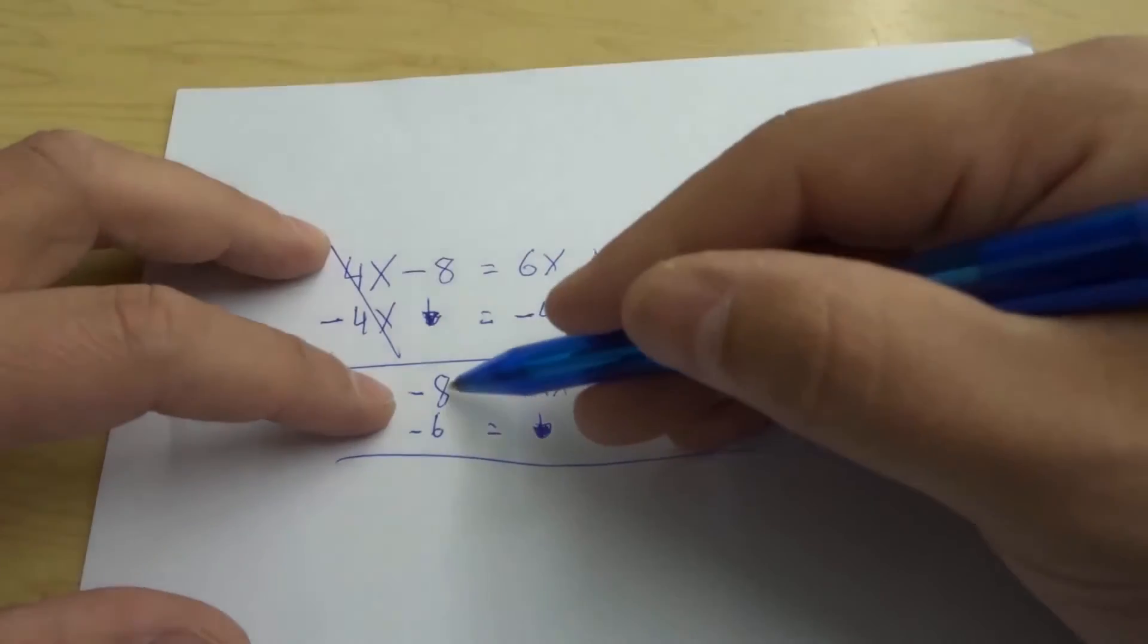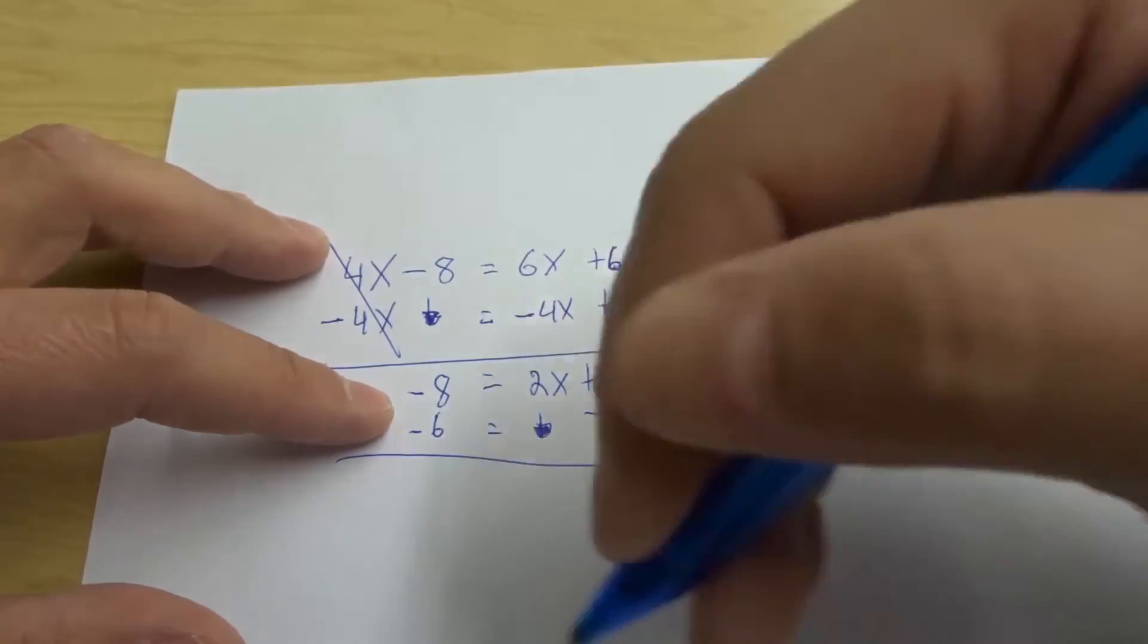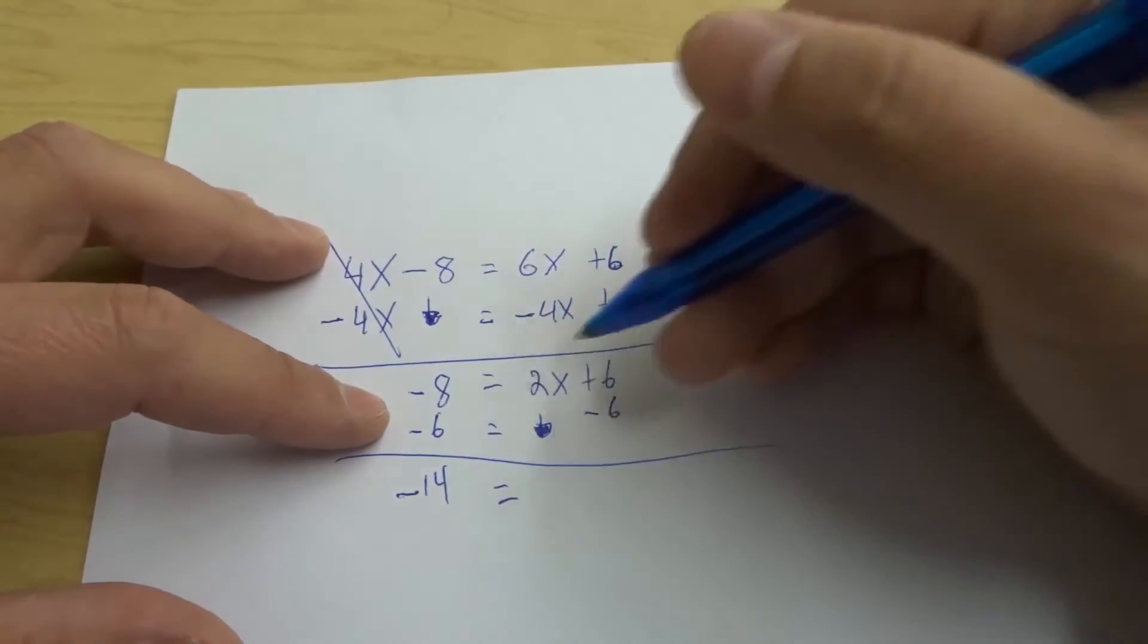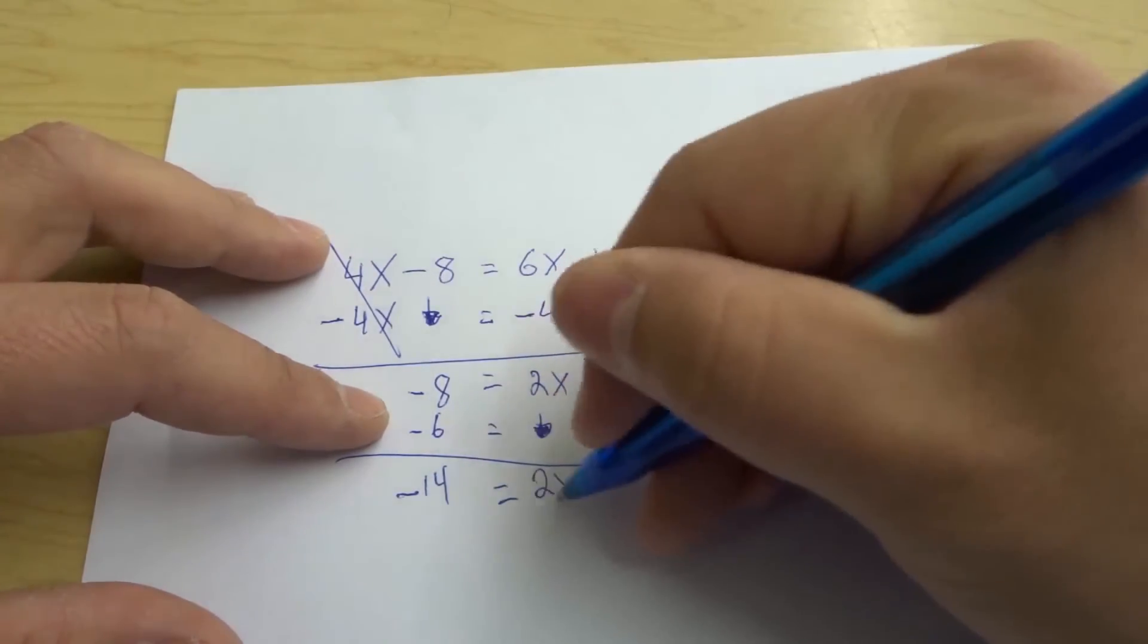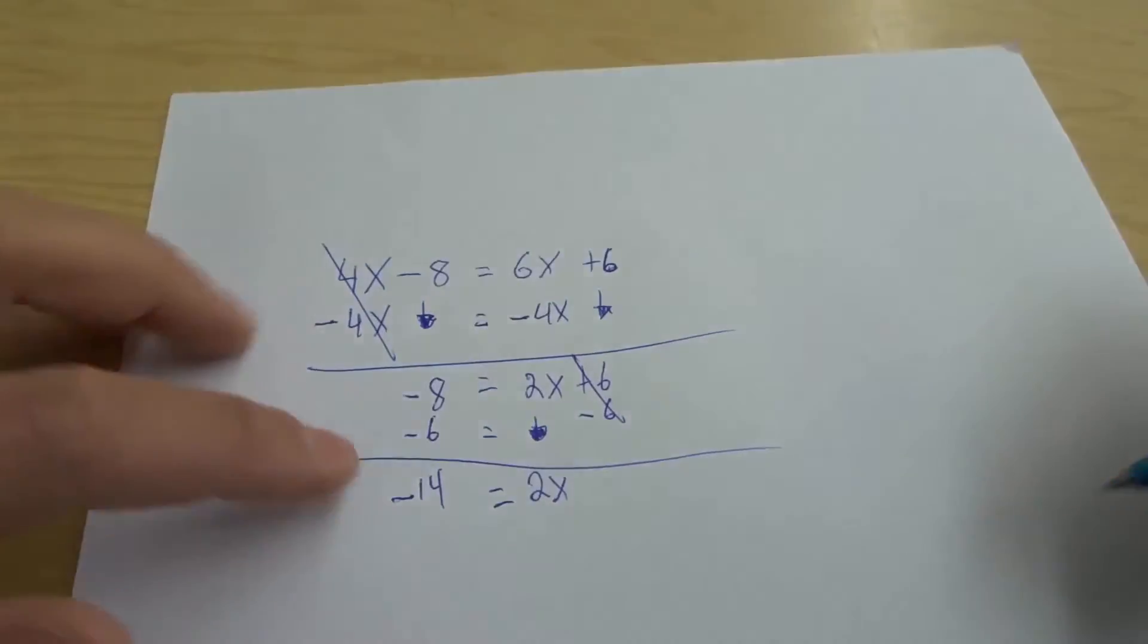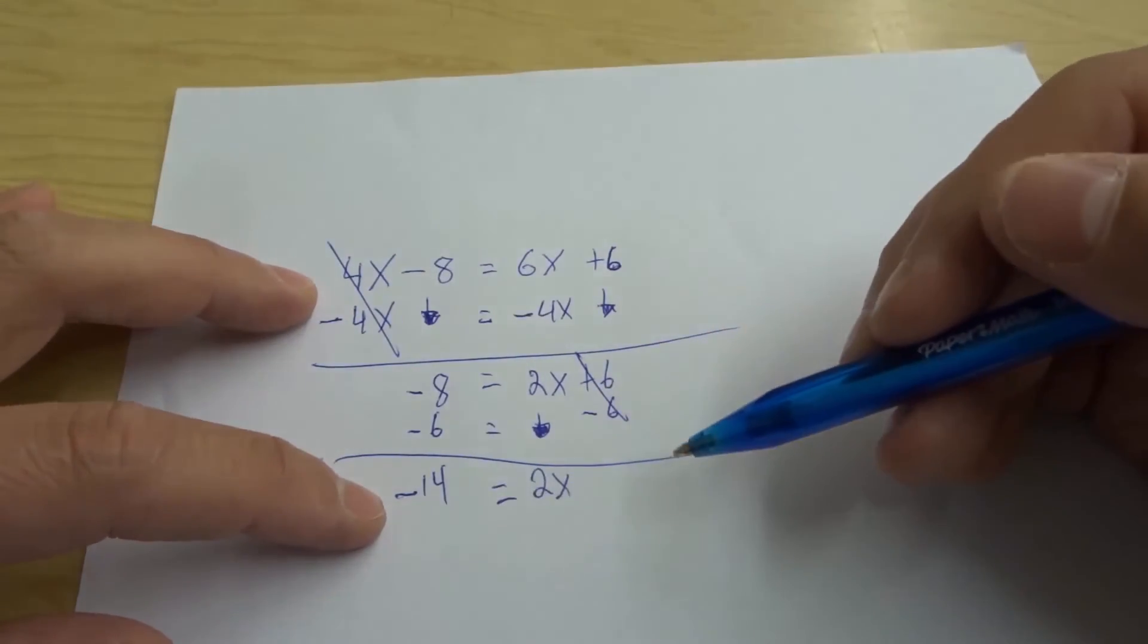So let's do this we have negative 8 minus 6 is equal to negative 14 and negative 14 is equal to 2x and then the plus 6 and the minus 6 cancel each other out just like that. So negative 14 is equal to 2x.